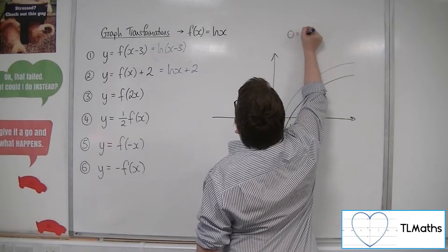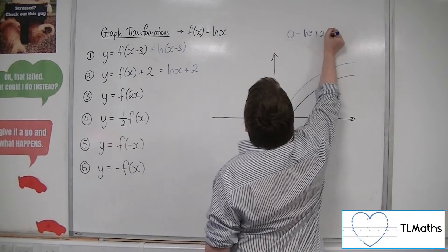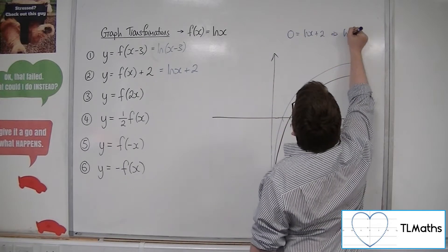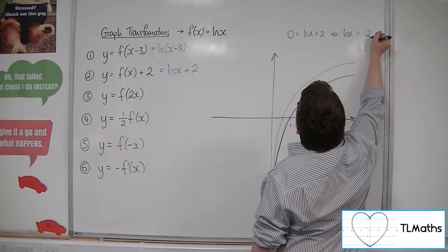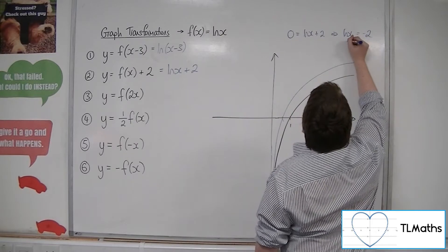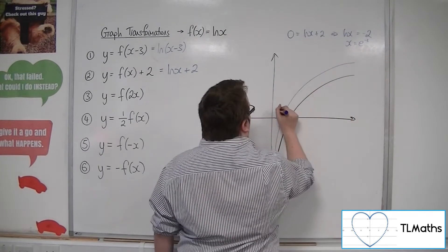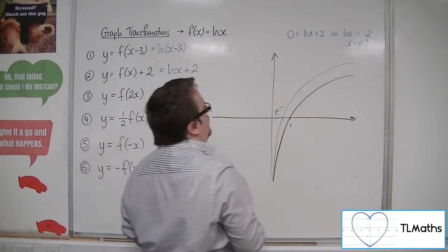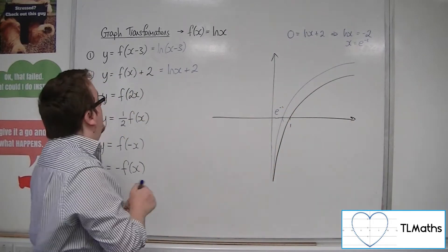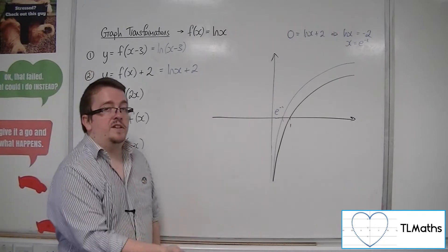So ln(x) must be minus 2. And to go from a logarithmic equation to the exponential equation, x would have to be e to the minus 2. So that's e to the minus 2, that point there. And that's how we can translate it vertically upwards.